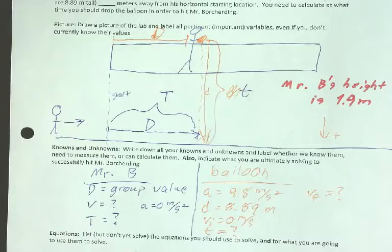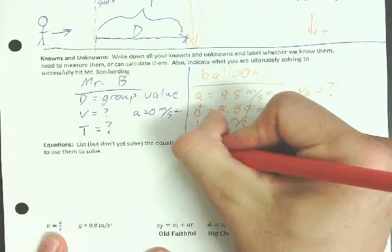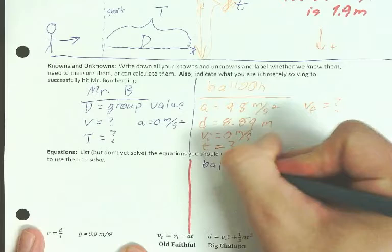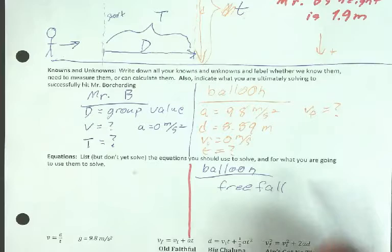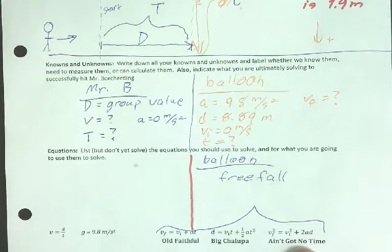All right, I'll give you a chance in a second to figure out the equation, but let's talk about the motions here. If you look at the knowns and unknowns, we can tell a couple of things. First of all, the balloon is in free fall because the balloon is acted on by gravity, which is 9.8, and it's accelerating. So for the balloon, you're going to have to use one of these equations.